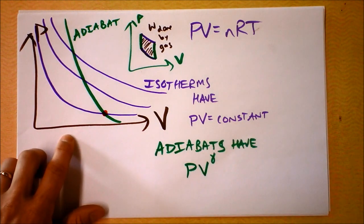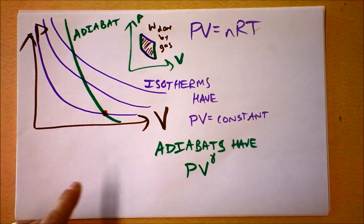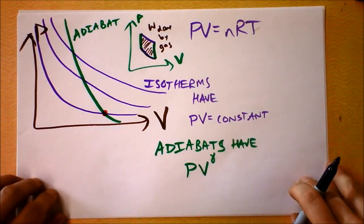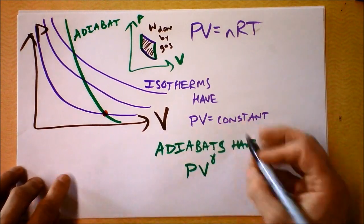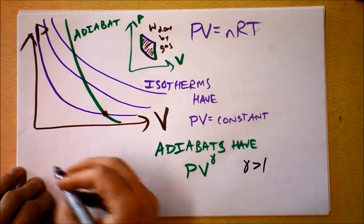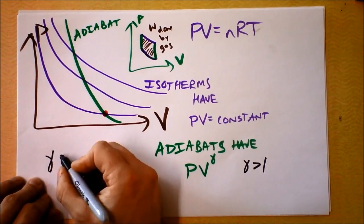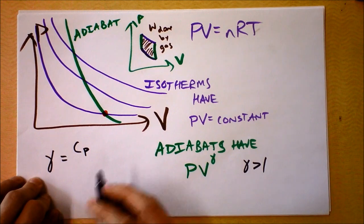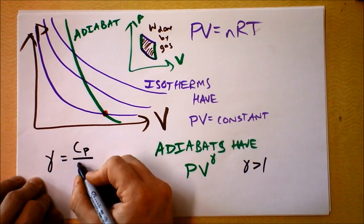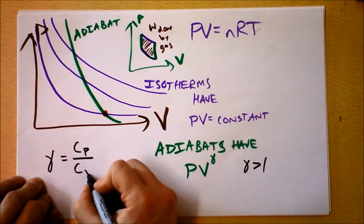But an adiabat, now, this gamma is a little bit of a mystery, and we don't quite have a feel for what it might be at all. I know that it's more than one. And I also am going to define gamma to be the ratio of the heat capacity at constant pressure to the heat capacity at constant volume.